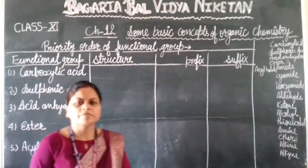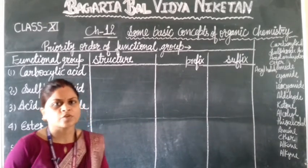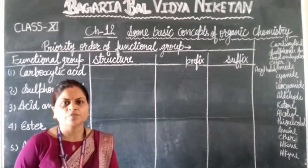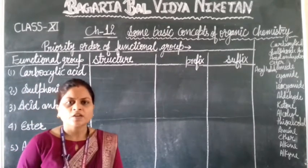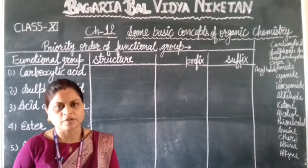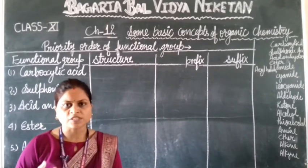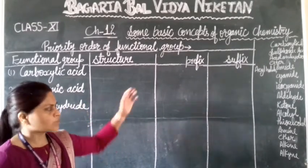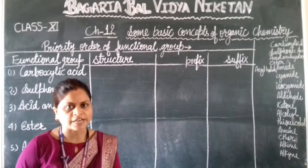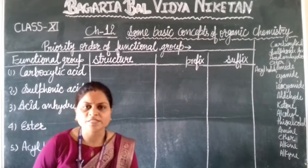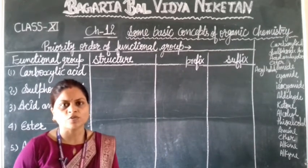Hello students, welcome back to BBVN online classes. We were discussing chapter 12 — some basic concepts of organic chemistry. In our last video we discussed functional groups, which are the part of an organic compound that decide all types of chemical properties. A functional group is a heteroatom in an organic compound other than carbon and hydrogen that determines chemical properties.